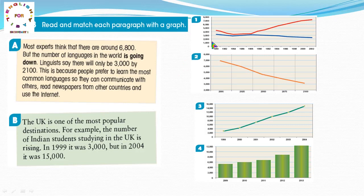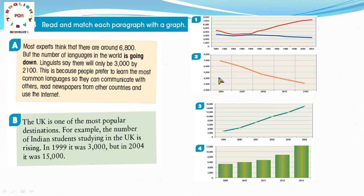نبحثوا نحن الرسوم البيانية اللي أمامنا هنا. عندنا هنا الخط بادي من بين 6,700 تقريباً 6,800. وبعدين يقول لي إنه going down quickly، يعني يهبط بسرعة كبيرة جداً. وإن اللغويين أو علماء اللغة يقولوا سيكون هناك فقط 3000 لغة بحلول العام 2100 زي ما شايفين هنا، عدد 3000. إذن paragraph A for graph 2.